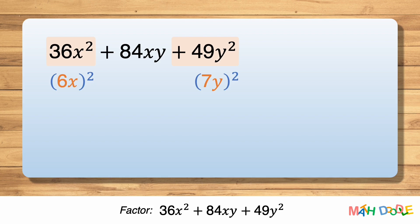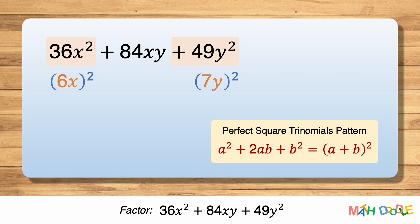Since the first and last terms of the trinomial are perfect squares, we may be able to use the perfect square trinomial's pattern to factor this trinomial. First, by comparing the trinomial with the pattern, let's find the values of a and b.